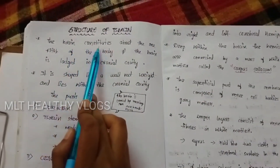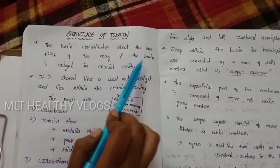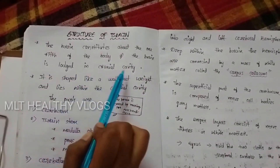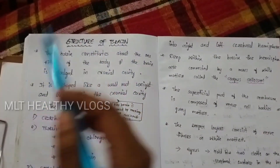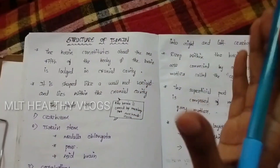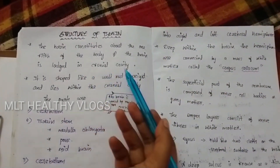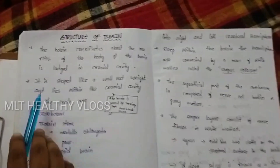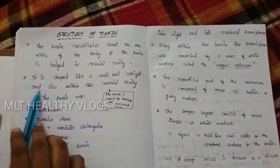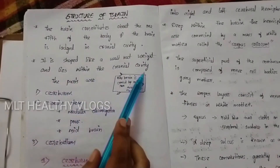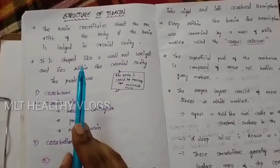The brain consists of about one-fifth of the body and is located in the cranial cavity. It is shaped like a walnut and lies within the cranial cavity.